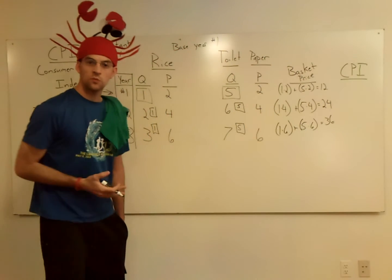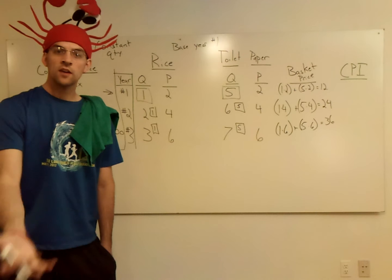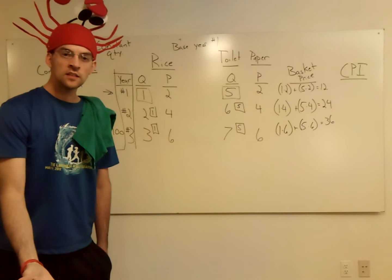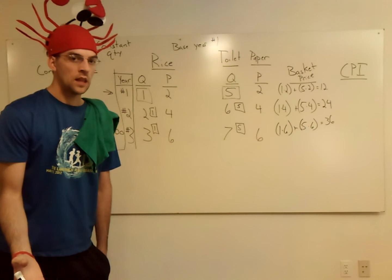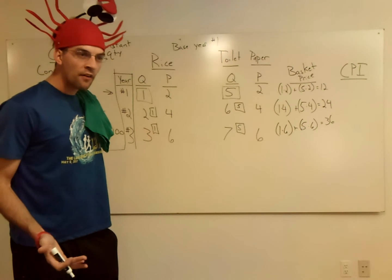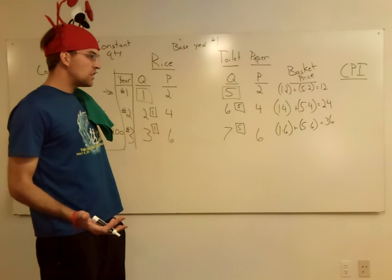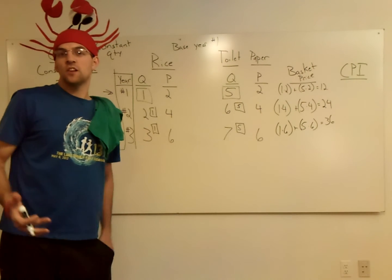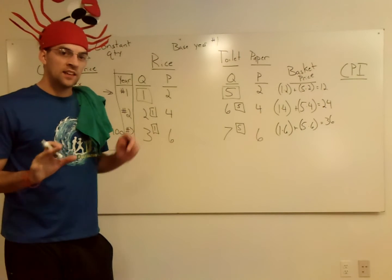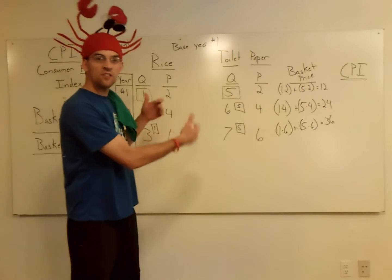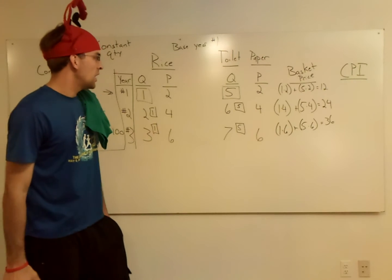I mentioned this when we were talking about the midpoint method the other day — you don't have a calculator. So if numbers are coming out to be like seventy-three and a half or fifty-two point six, there's probably something amiss. They're probably going to give you pretty easy, malleable numbers.